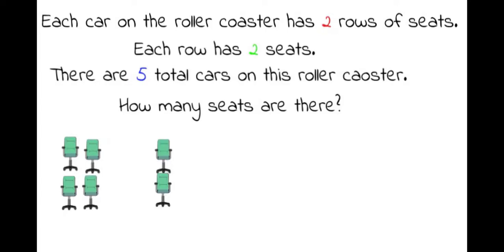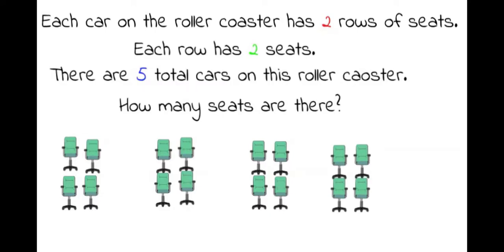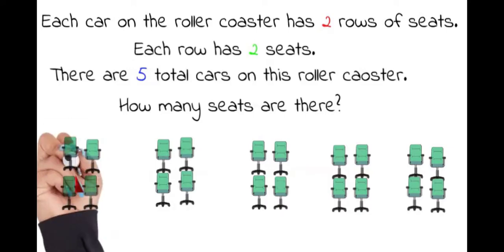So I'm going to make two rows with two in each row. But at the same time, I have to make a total of five cars. So these are my seats. I know they don't look like roller coaster seats, but these are my seats that I'm going to use to represent the five cars with two in each row.